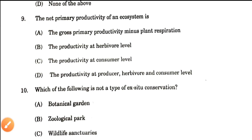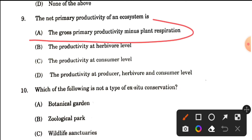Question number 9: The net primary productivity of an ecosystem is what? Net primary productivity — we know it is gross primary productivity minus whatever the plant loses in its metabolic processes. So NPP equals gross primary productivity minus plant respiration. Option A is the correct answer.